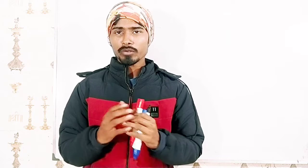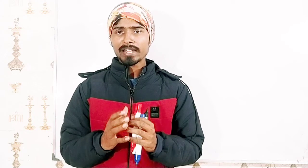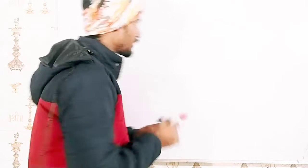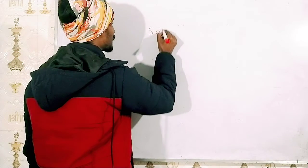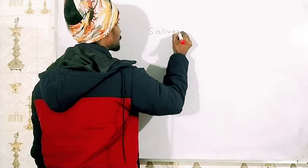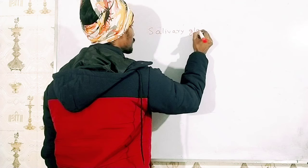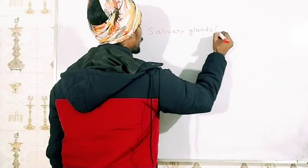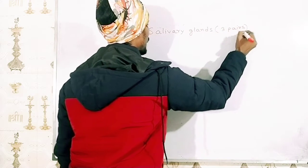Welcome to Circuit Buddy. This is the fourth lecture of the digestive system lecture series. Today we'll be discussing the salivary glands. First of all, let us write salivary glands. We have three pairs of salivary glands.